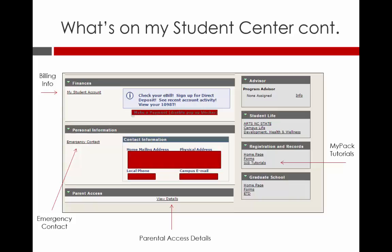If you scroll down on your student center, you will find other useful information. On the left side of the screen, you will find links to your student account, which includes your billing information. You will also find your emergency contacts, mailing addresses, and information regarding parental access. On the right side of the screen, you will find your advisor's name and link to contact information, along with links to those MyPAC tutorial videos. MyPAC is also called CIS, and those tutorials can be viewed by clicking on the CIS Tutorials link.